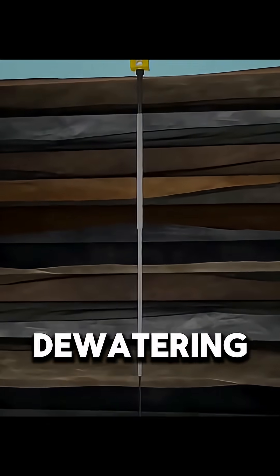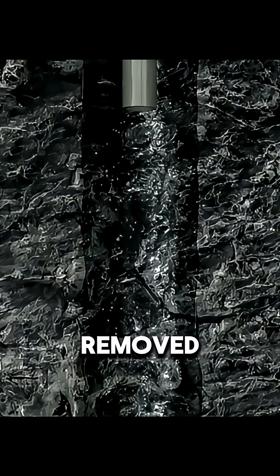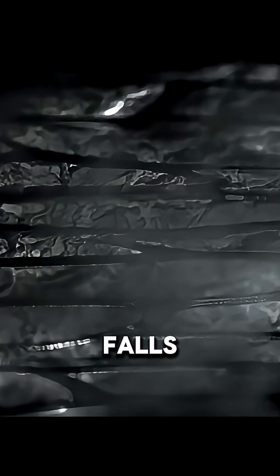The second method is dewatering and pressure reduction. A separate well is drilled to pump out groundwater from the coal seam. As the water is removed, the pressure drops. Once it falls below a certain point, the gas begins to detach from the coal and flow outward.